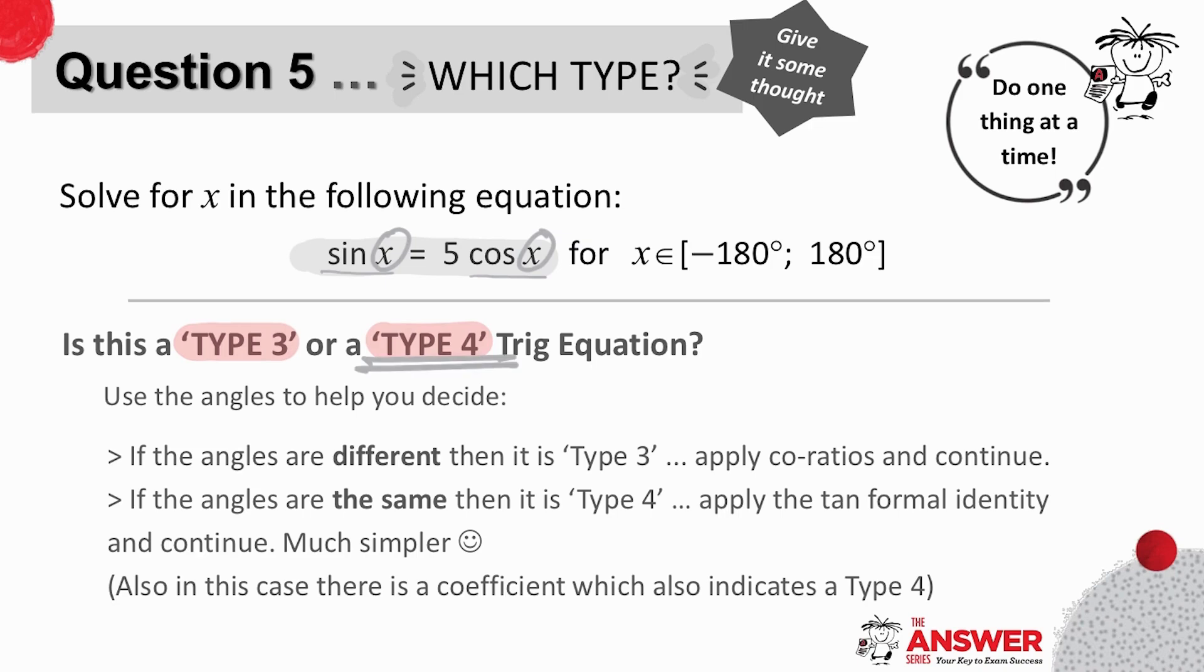In this example, there is also a coefficient of 5, which doesn't allow for type 3 to be applied, but the coefficient could have been 1. So you've really got to be on the lookout for when the angles are the same. Pause here to give this question a go on your own first, before going through it together.